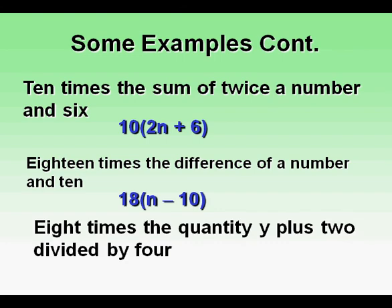8 times the quantity y plus 2 divided by 4. This translates into 8 times the y plus 2 inside parentheses and then 4 at the bottom of the division bar.